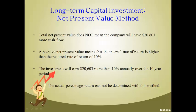The total net present value does not mean the company will have $20,603 more cash flow. A positive net present value means the return on the investment is expected to be $20,603 more than the required return of 10% over the 10-year period. This analysis does not give the return percent — it only determines if the investment will earn more or less than the required return.